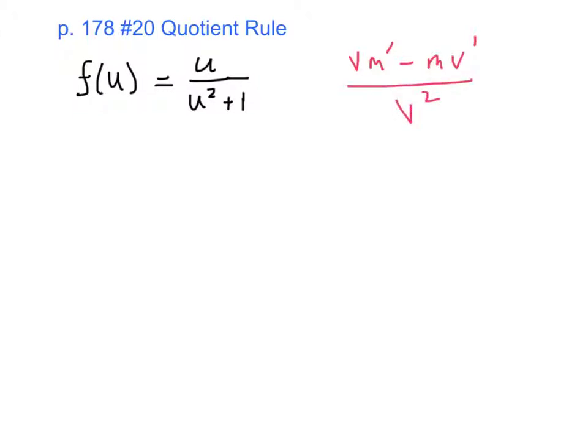And so, this is assuming that m is on top in the numerator and v is on bottom. So, I'm going to assign m to equal u, which is the independent variable, and v to equal u squared plus 1. Then, our derivatives are m prime equals 1 and v prime equals 2u.